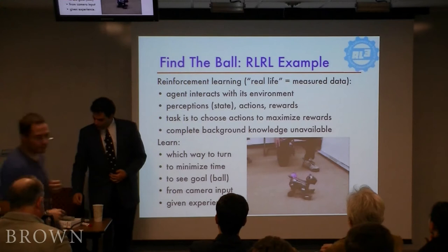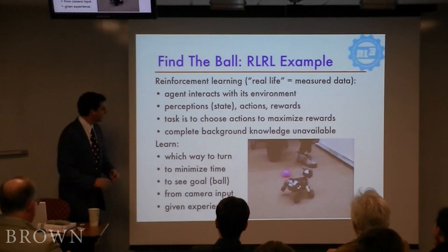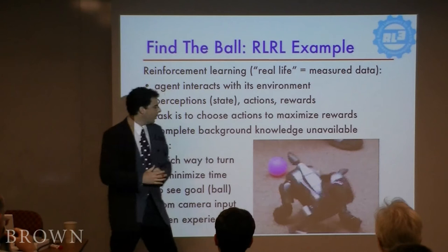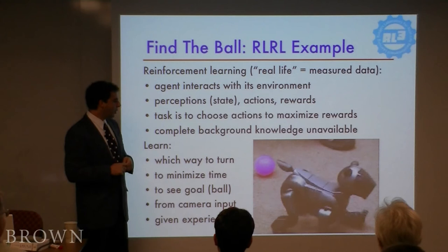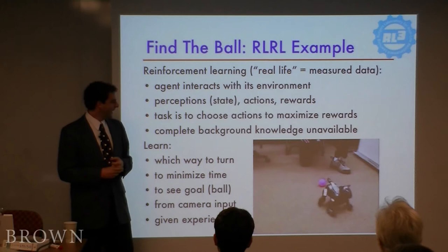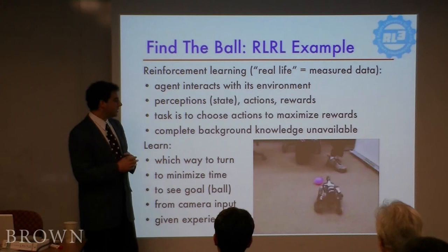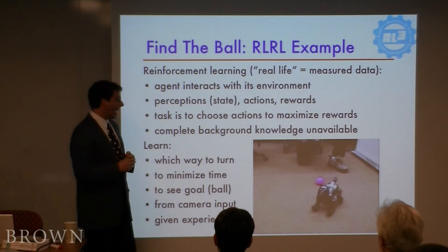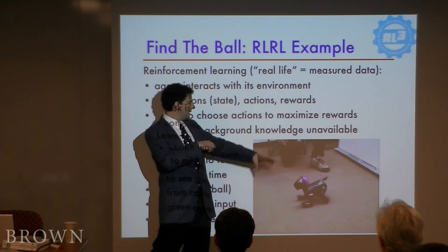Just to give you a sense of what I mean by all this, here's an example of a real life reinforcement learning problem. This is AIBO, the Sony AIBO robot, that is interacting with its environment to try to achieve its goal. In this case, the goal is to see the pink ball. What we give it to start out with is the ability to do two things: go left and right, and also to perceive its environment. It can see basically in terms of color histograms — the colors of things in the direction it's pointing.